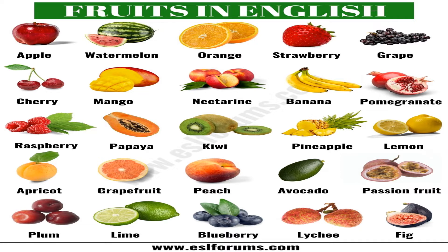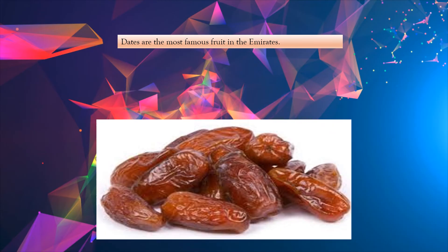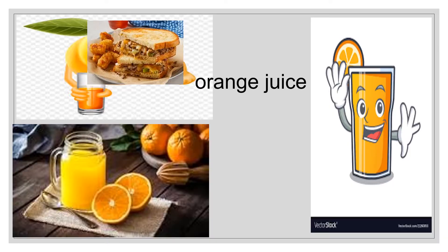If I ask you what's your favorite fruit? For example, my favorite fruit is banana — so I like banana more than the other fruits. Or my favorite fruit is watermelon, so I like watermelon more than the other fruits. Here we can see dates. Dates are the most famous fruit in the Emirates. I like to eat dates. Orange juice is a drink, and I like to drink orange juice. Maybe it's not my favorite juice, but I like it.